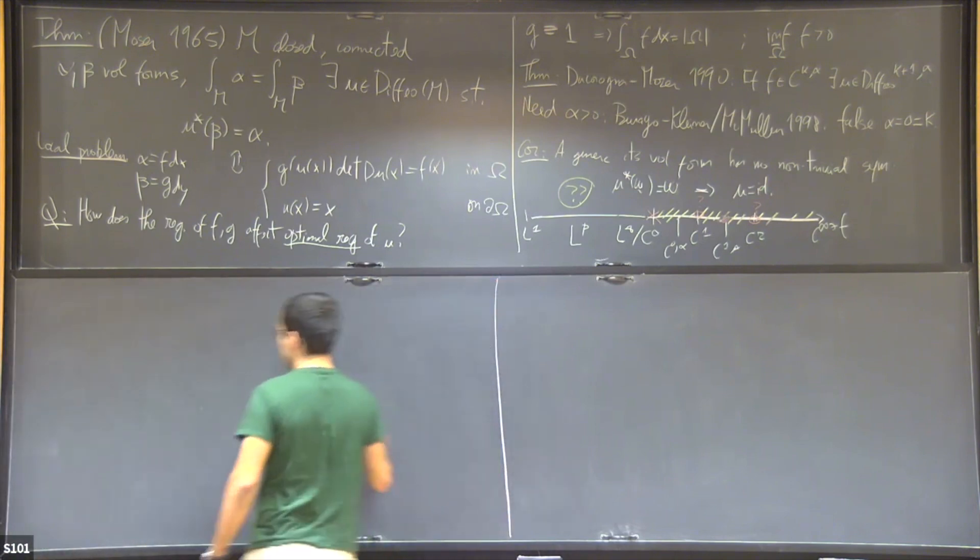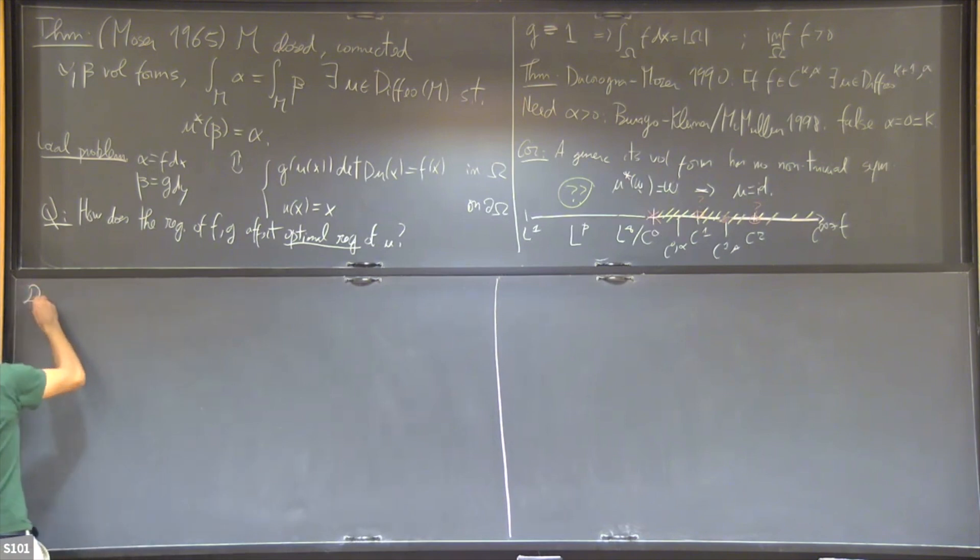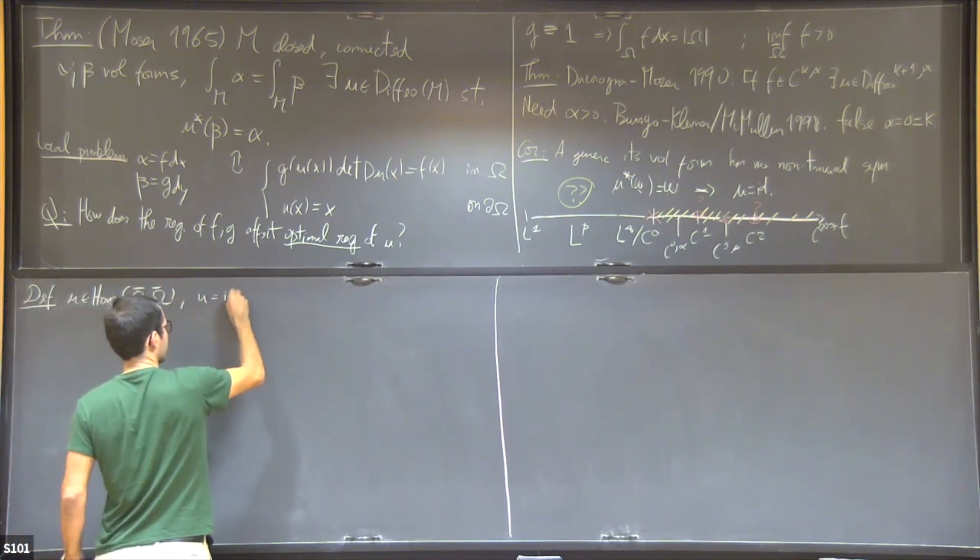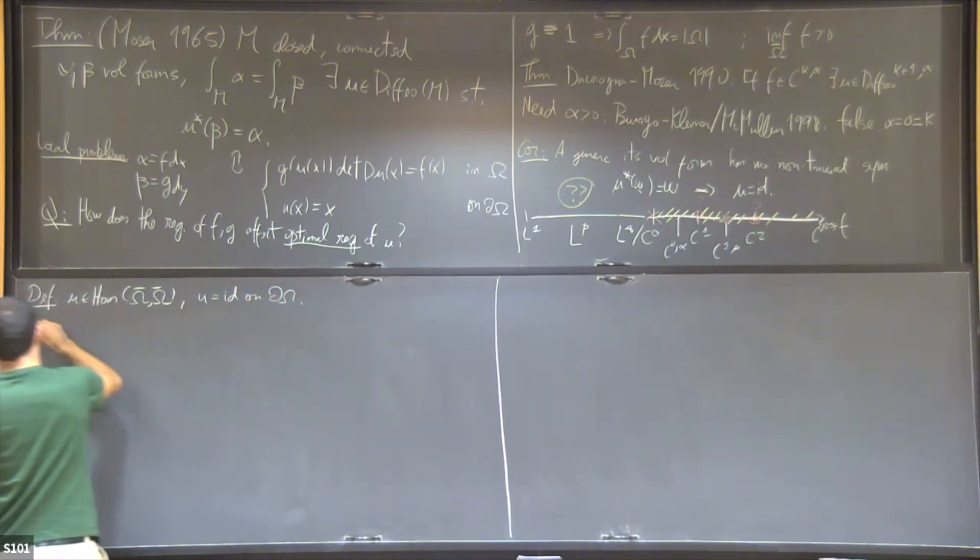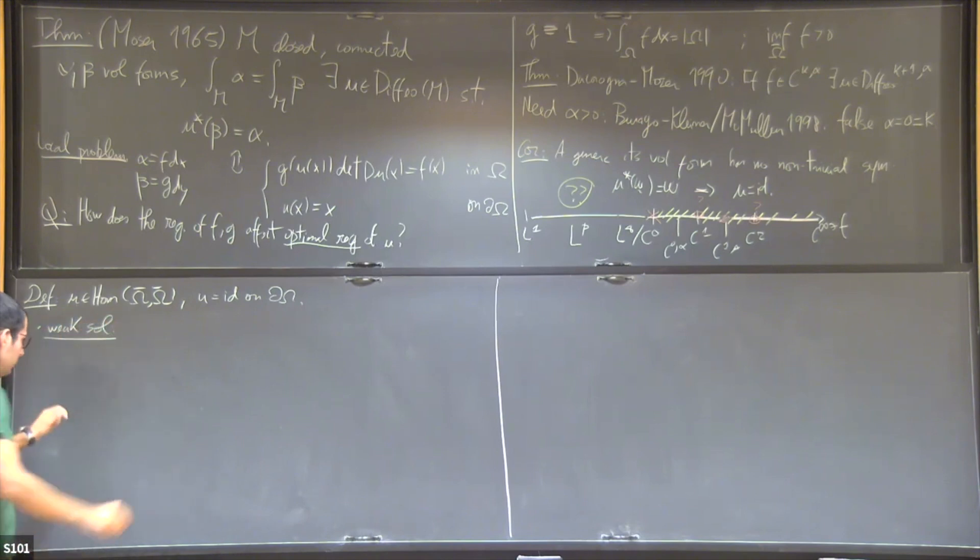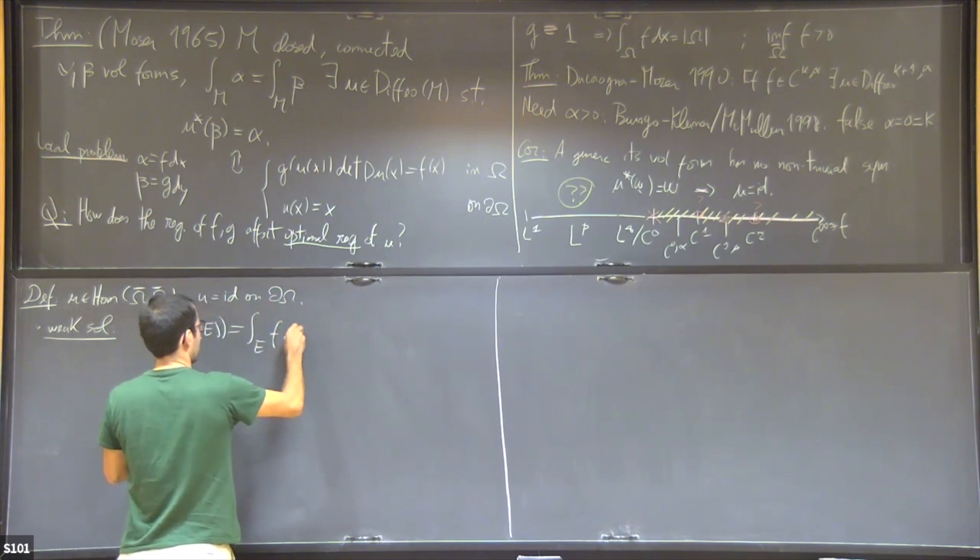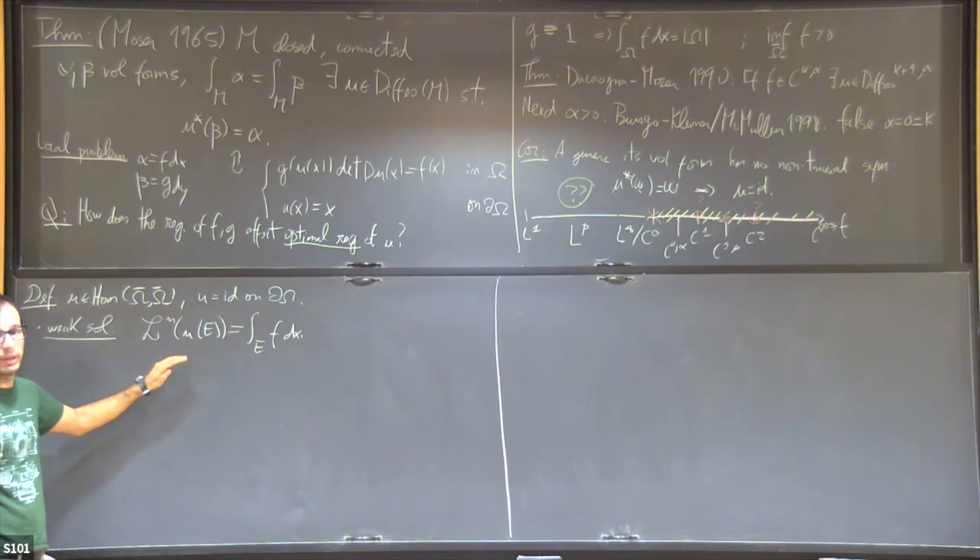Here's the definition of weak solutions. Let's say that I have a homeomorphism U from omega to omega, and U is the identity on the boundary. Weak solution means that the measure of the set E under U is just the integral of my density over that set. Clearly by the change of variables formula, if U is smooth, I recover my original formulation. But the good thing about this formulation is that I don't need any differentiability to make sense of it.